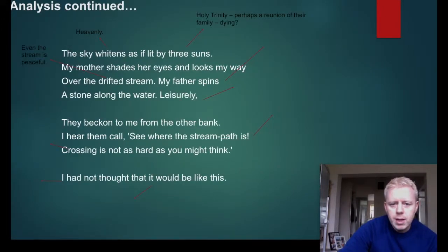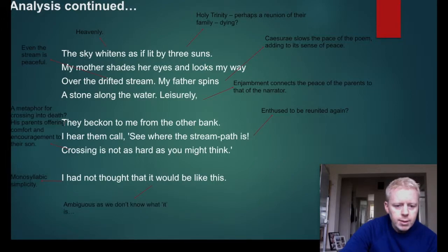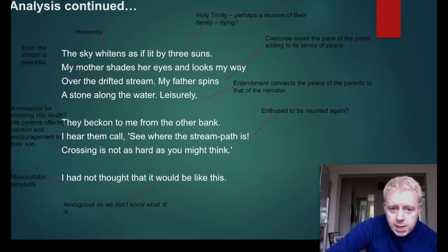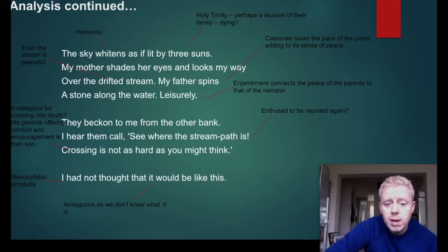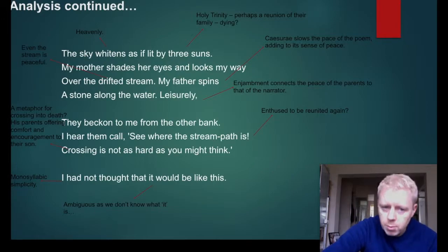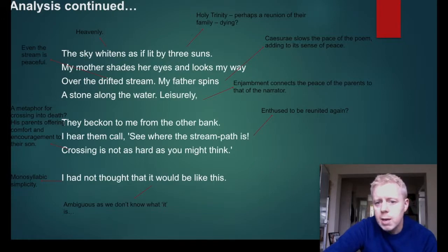The final two stanzas plus a line: 'The sky whitens as if lit by three suns. My mother shades her eyes and looks my way over the drifted stream. My father spins a stone along the water. Leisurely, they beckon to me from the other bank. I hear them call. See where the stream path is. Crossing is not as hard as you might think.' The sky whitens — more heavenly imagery — lit by three suns representing the Holy Trinity: the Father, Son, and Holy Ghost. Perhaps a reunion of the family, and perhaps dying.